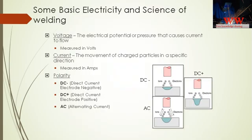Before we proceed to how welding works, let's first understand some basics of electricity. Voltage is the electrical potential or pressure that pushes current to flow. Taking the example of a water line: if there is no pressure, water will not flow; giving pressure makes water flow in the pipe. Similarly, voltage is the pressure that makes current flow. Current is the movement of charged particles or electrons in a direction. The unit of voltage is volts and for current is amperage.